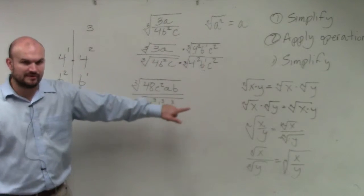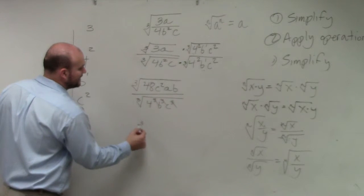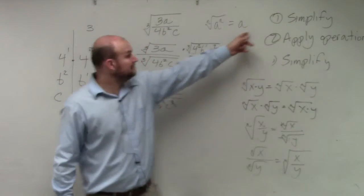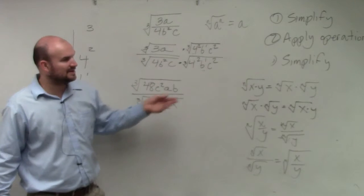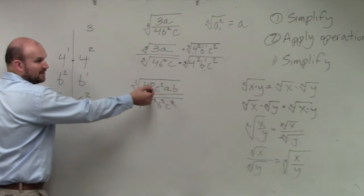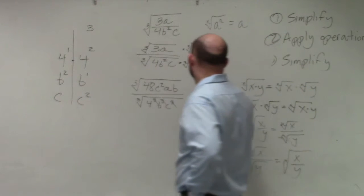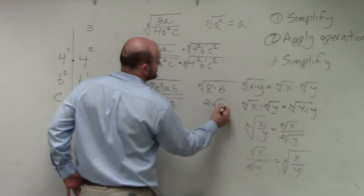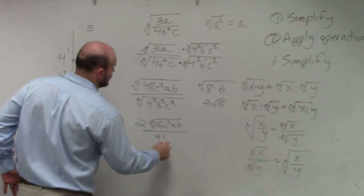Do you guys agree with me I could take the cube root of all of those? So therefore I'm left with 4bc. Oh no — I just didn't follow my steps. Simplify, which we did. Then apply the operation, which we did — we rationalized the denominator. The last thing is simplify. Can I rewrite 48? Is 48 a cube number? No. However, can I rewrite 48 as a product of one of those cube numbers? 8 and 6. So the cube root of 8 times 6 — the cube root of 8 is 2 — cube root of 6. So my final answer would be 2 cube root of 6c²ab divided by 4bc.